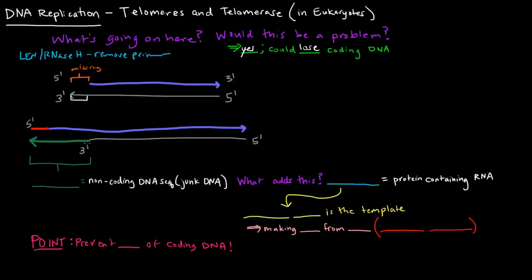What happens is the 3' end is extended. So this green portion is added here, and this portion is called a telomere. And what the telomere is, it's just a bunch of non-coding DNA, it's just a bunch of junk DNA.